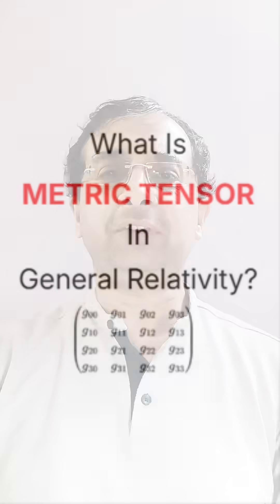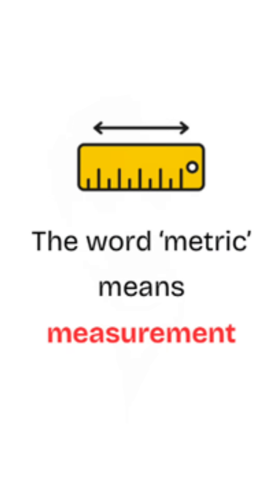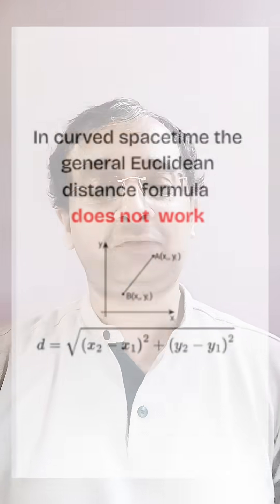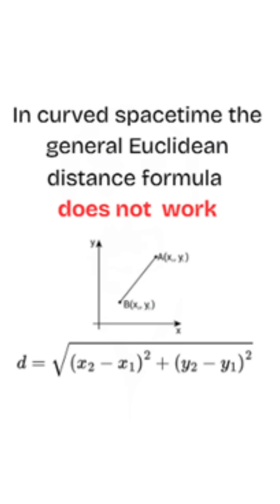The metric tensor is a very important concept in understanding Einstein's general relativity. As the name suggests, a metric is a kind of ruler — you can think of it as a protractor which measures the distance between two points, angles, and so on. In flat space, the Euclidean distance formula works, but in curved space we cannot use the Euclidean formula. Hence we need a different kind of ruler, and this ruler is called a metric tensor.